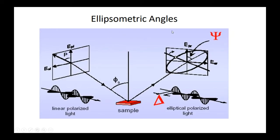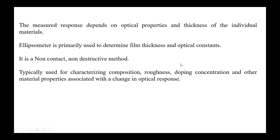Some of the ellipsometric angles: from the left arm of the ellipsometer, linearly polarized light is passed and then it gets reflected from the sample, resulting in elliptically polarized light. From this elliptically polarized light, we get delta — the phase change — and psi — the amplitude ratio. The measured response depends on the optical properties of the material and the thickness of the individual material.